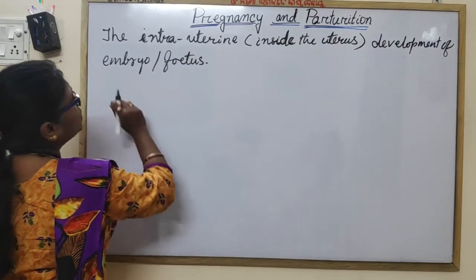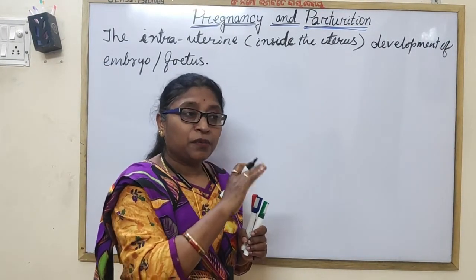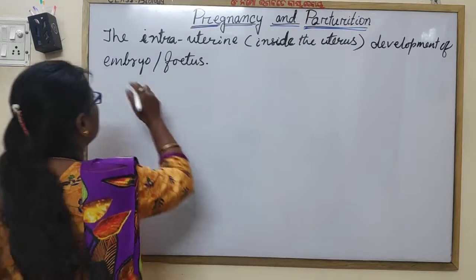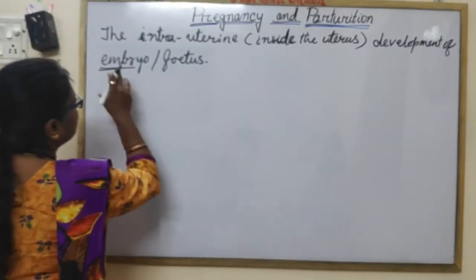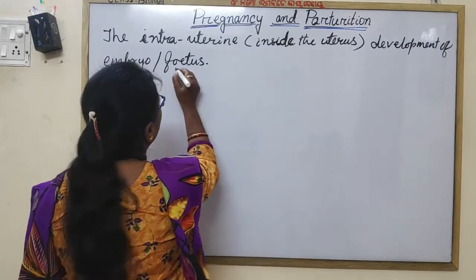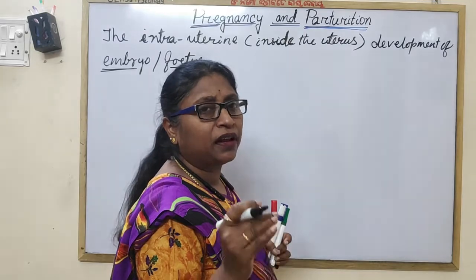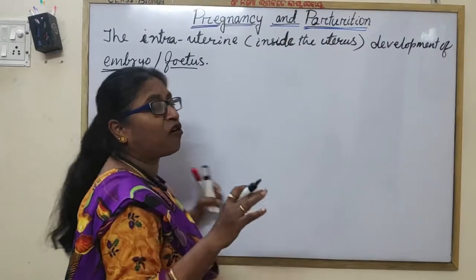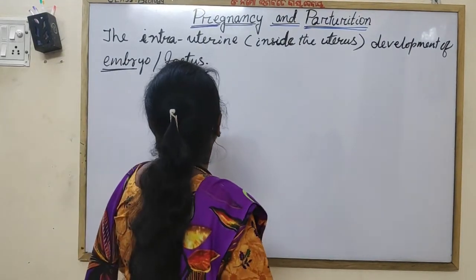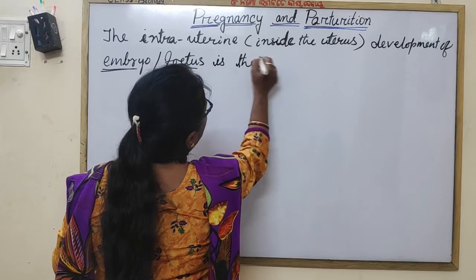The reason we say 'embryo or fetus' is because after fertilization, from the zygote stage up to 8 weeks (about 2 months), the developing organism is called an embryo. From the beginning of the 9th week onwards, it is called a fetus, as all organs are developed by then.